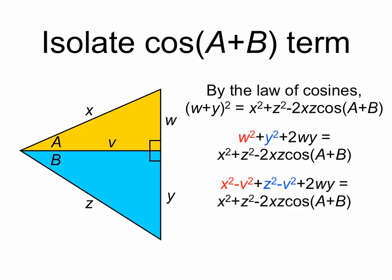And we can apply the Pythagorean theorem twice now. W squared in the top triangle is equal to x squared minus v squared. And similarly, y squared in the bottom triangle is equal to z squared minus v squared.